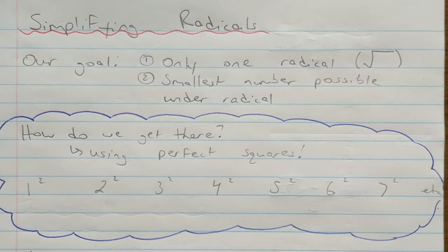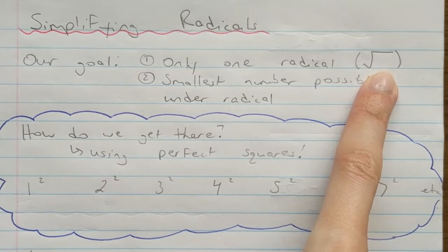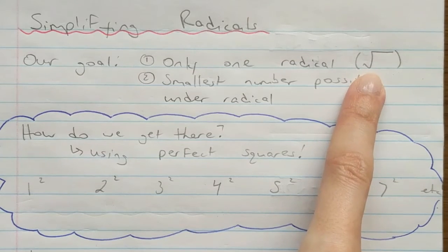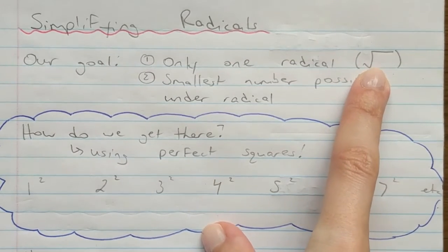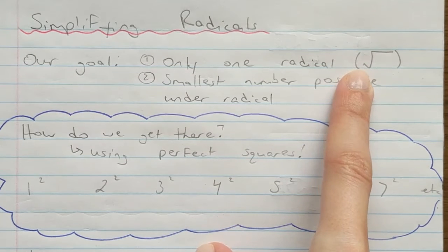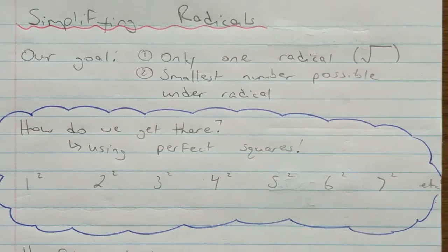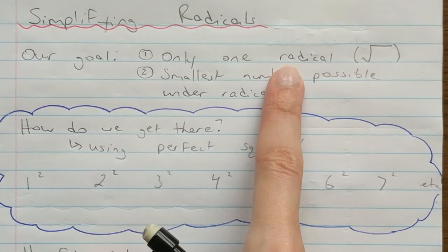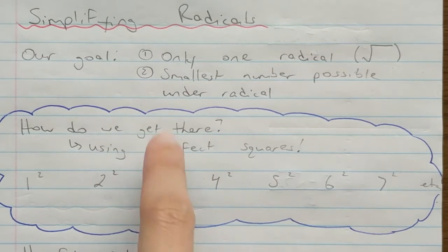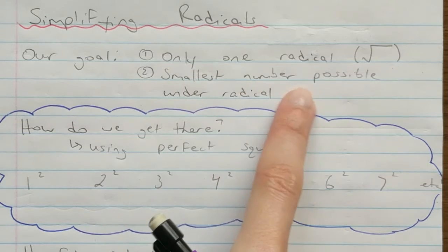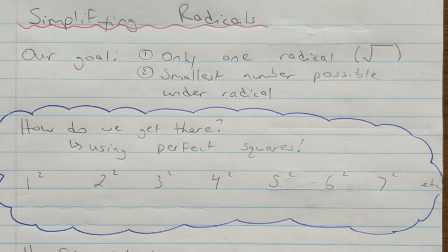Today we are going to be doing a lesson on simplifying radicals. A radical is this square root sign that you've previously probably only considered to be a square root, but there are also cubed roots and later fourth roots, fifth roots, etc. When you are simplifying a radical, your goal is to only have one radical sign in your final answer, and you want the smallest number possible underneath your radical sign.